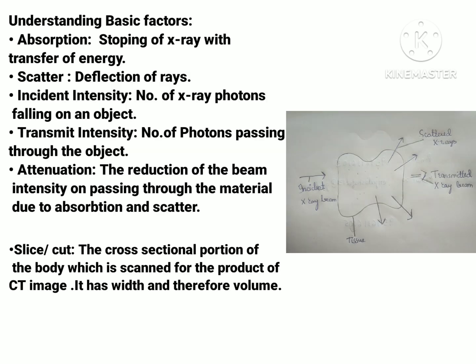To understand how CT scan works, it's important to understand some basic terms. The first term is absorption, which means the absorption of x-rays into the body or an object, defined as the stopping of x-rays with the transfer of energy. Next is scatter, which is the deflection of x-rays. Next is incident intensity, meaning how many x-ray photons are falling on an object.